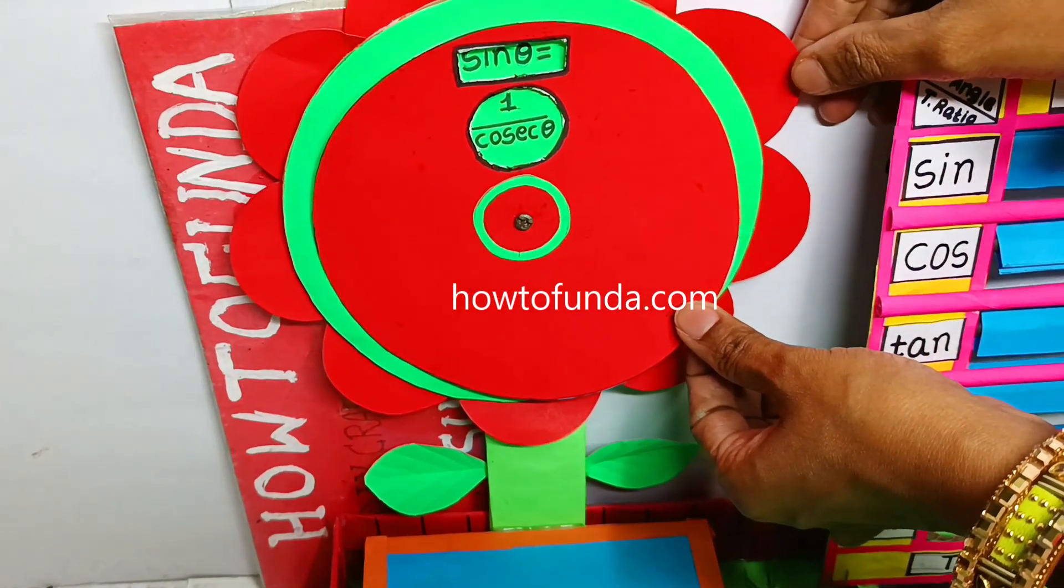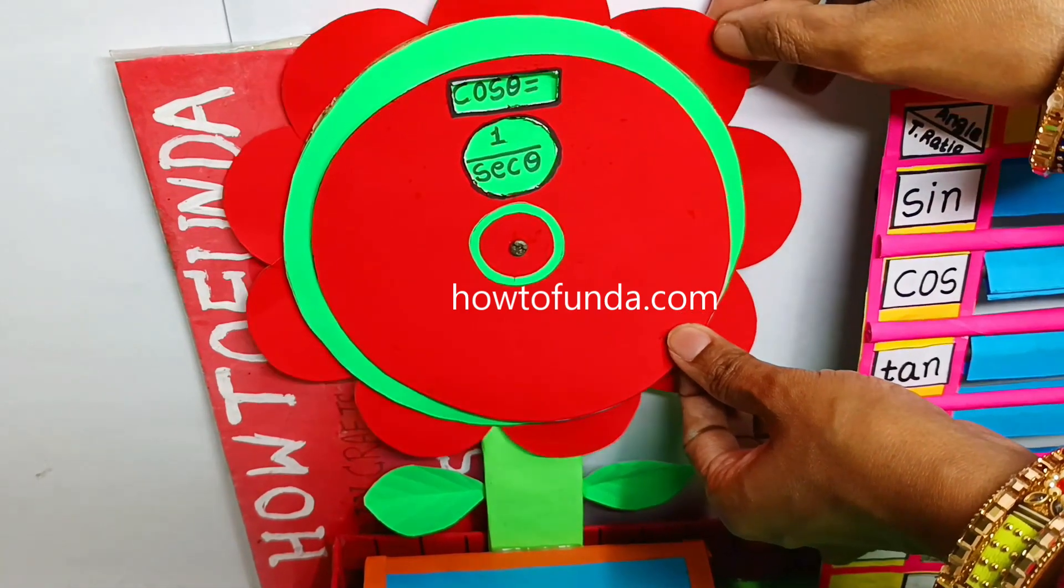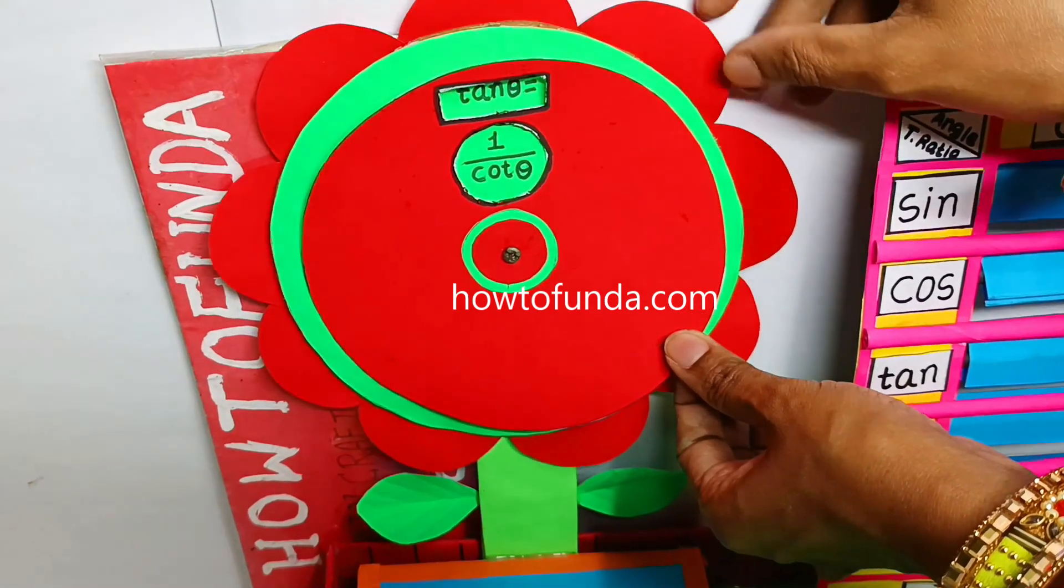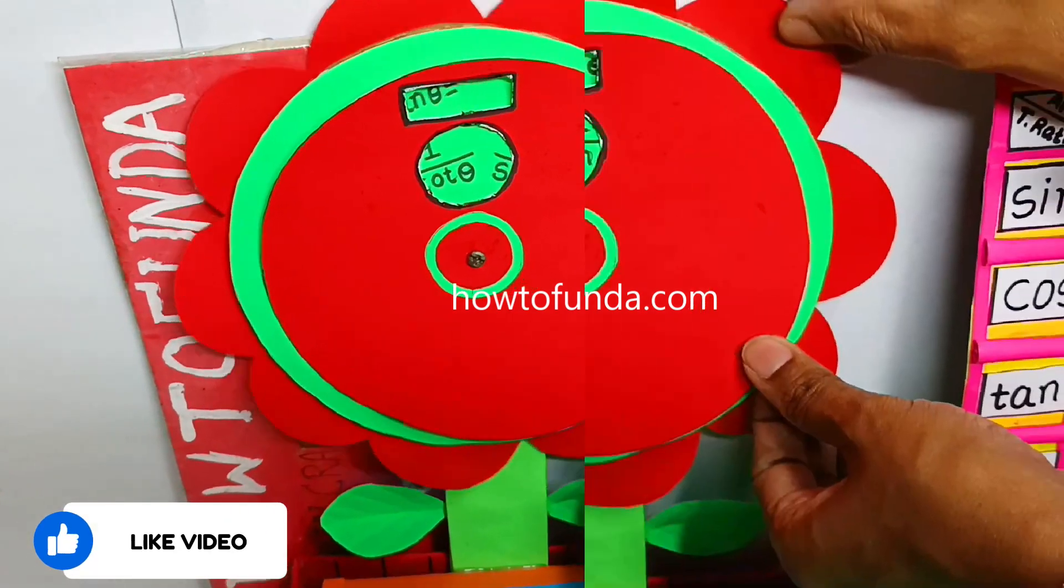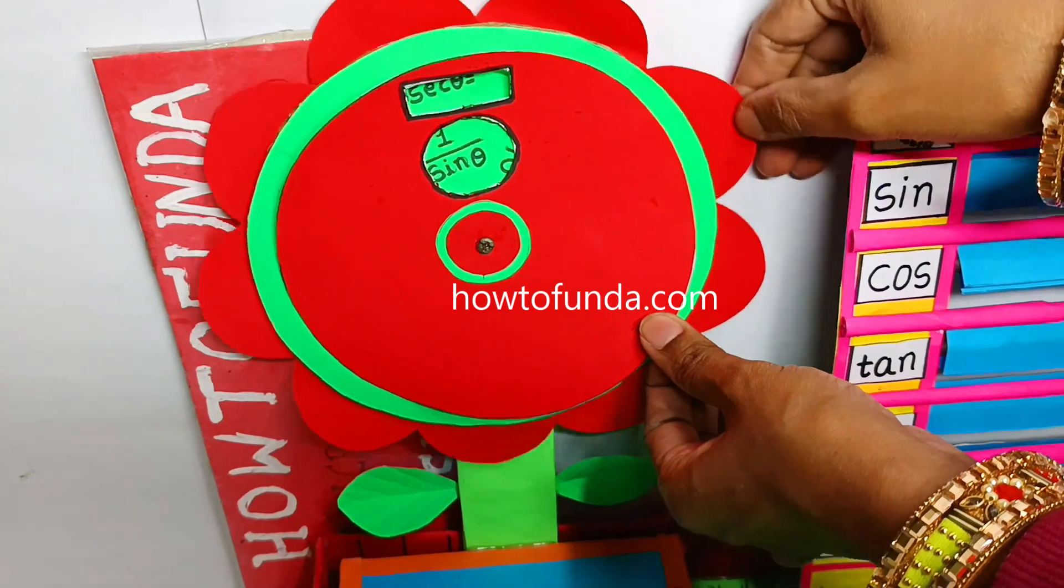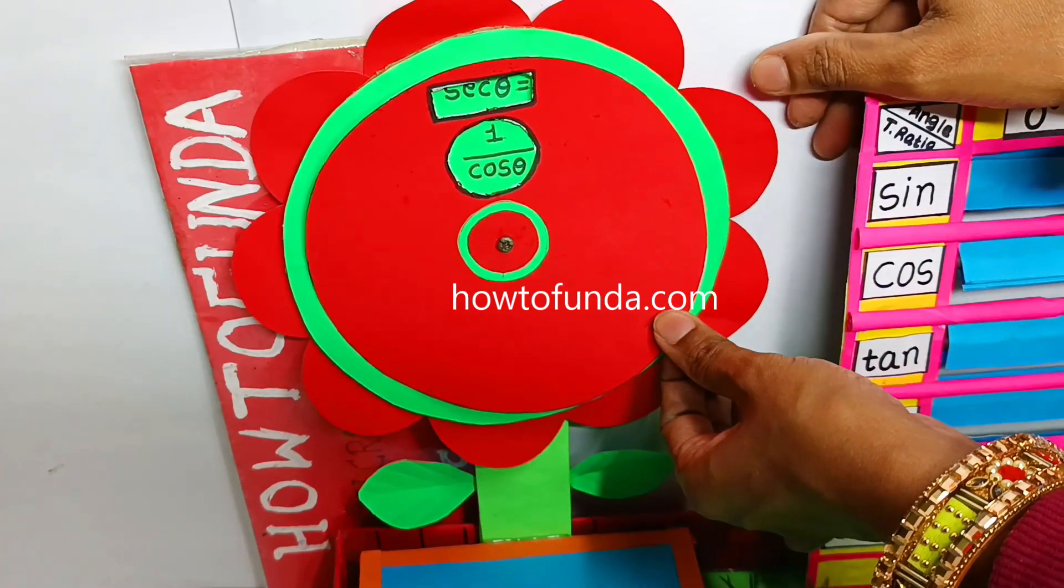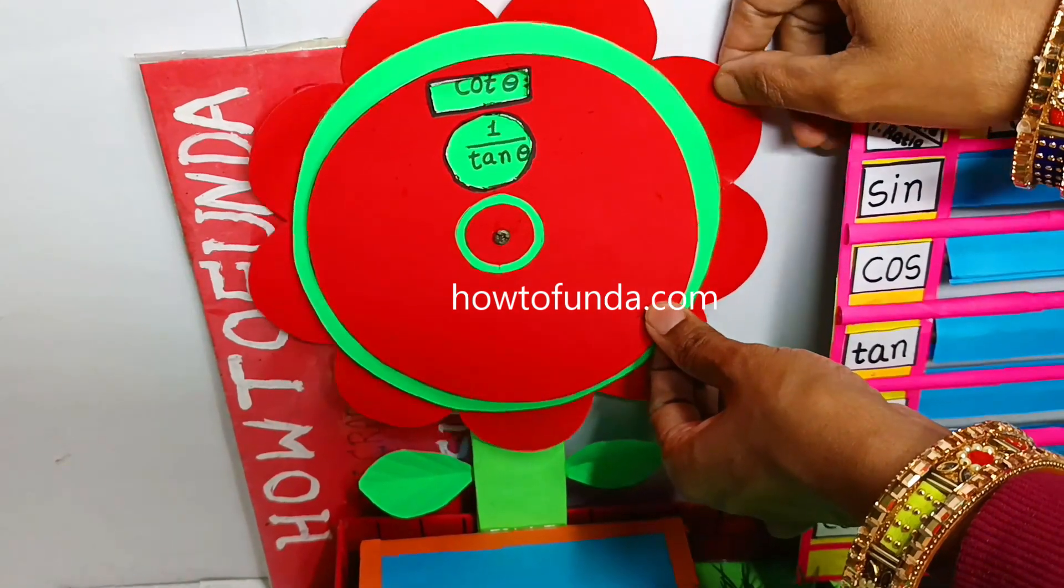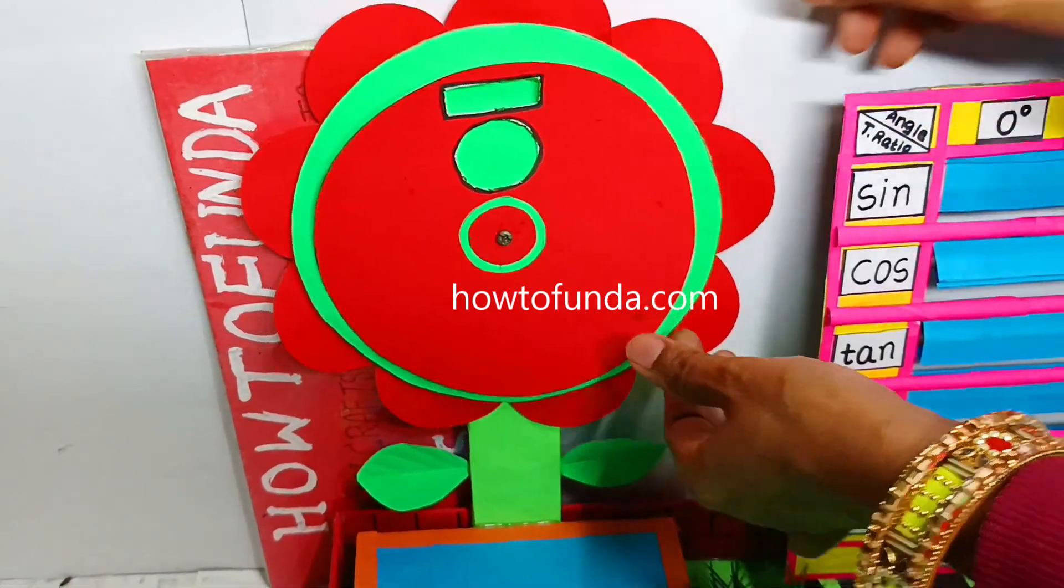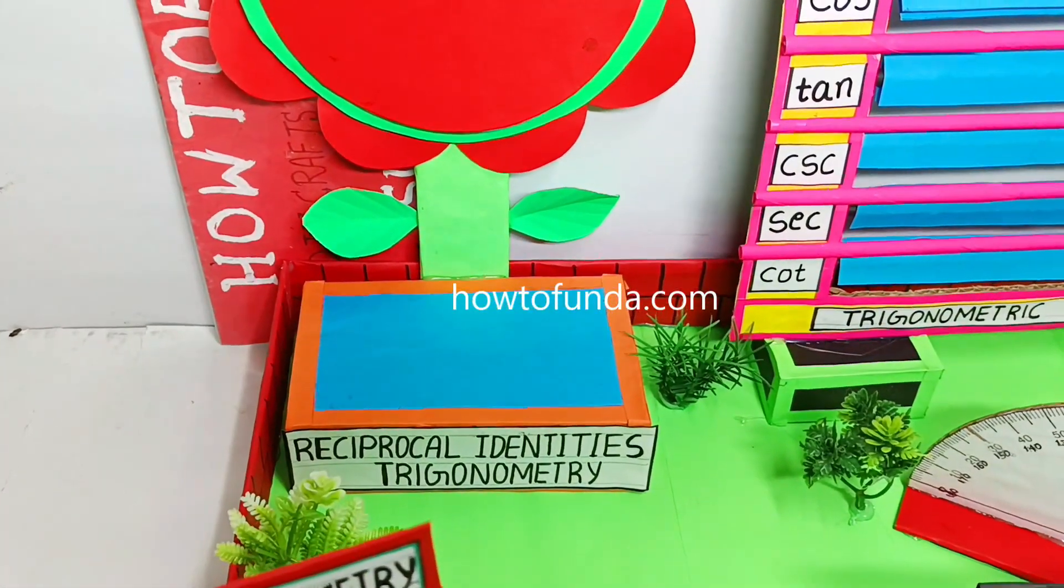Cos θ is represented by 1 by sec θ, and tan θ is 1 by cot θ, and cosec θ is 1 by sin θ, and sec θ is 1 by cos θ, and cot θ is 1 by tan θ. This is how we represented the reciprocal identities in trigonometry.